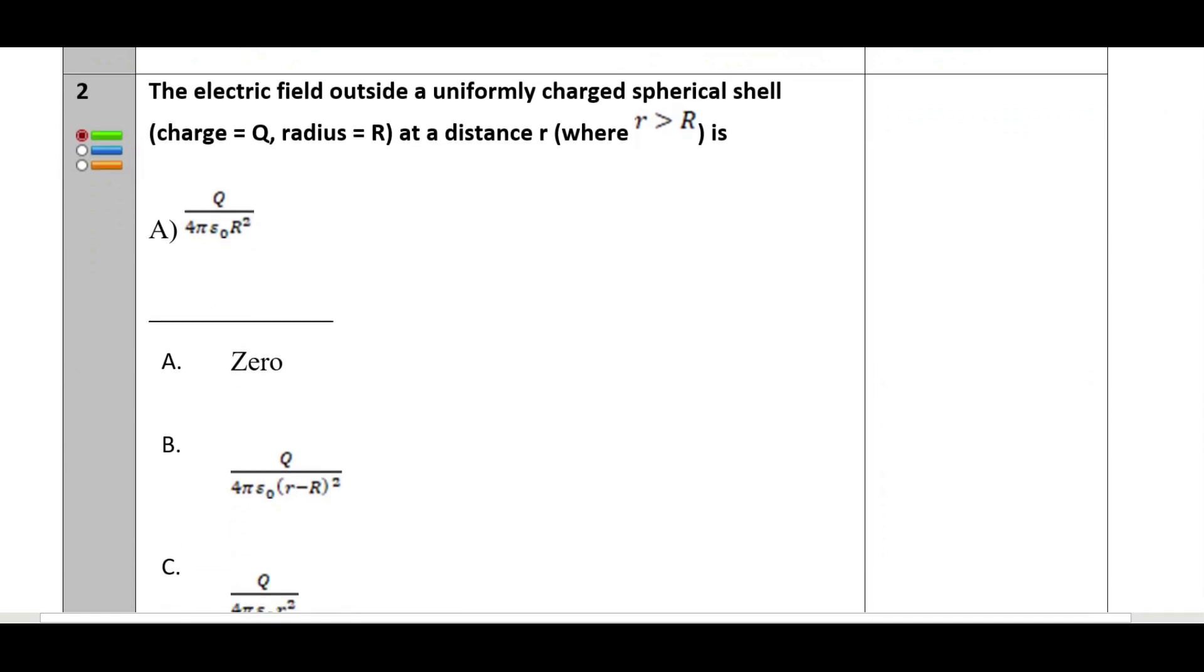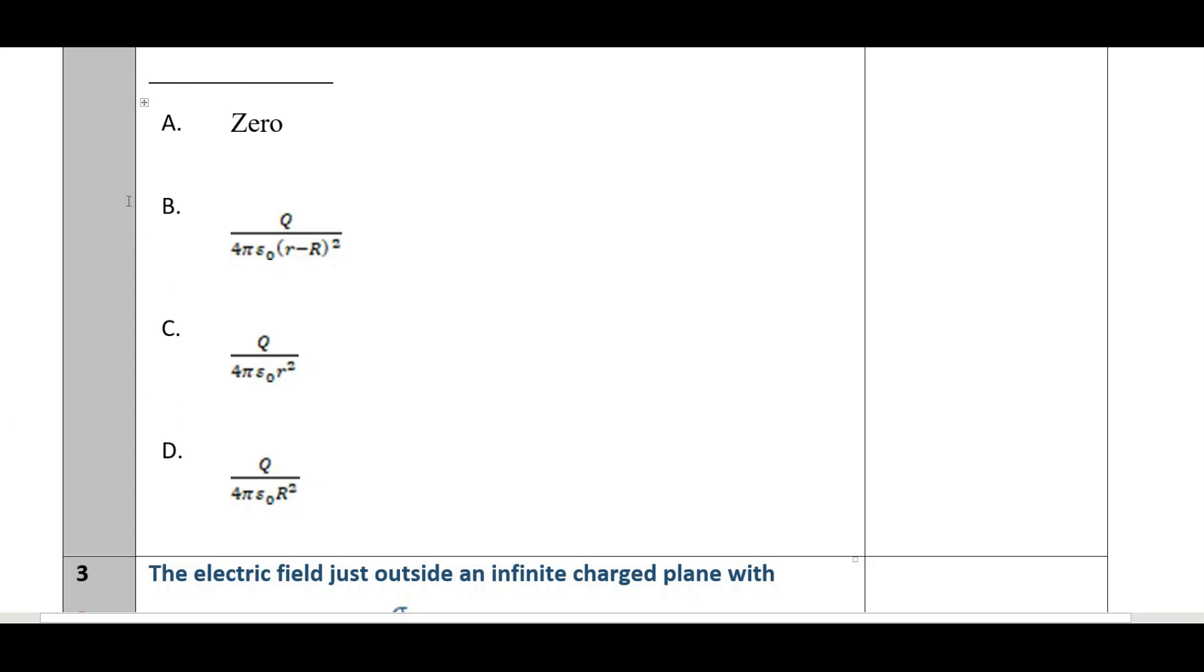Then second one: the electric field outside a uniformly charged spherical shell with charge q and radius r at a distance R. We have to remember that small r is greater than capital R. The correct answer will be option C: Q by 4πε₀r².